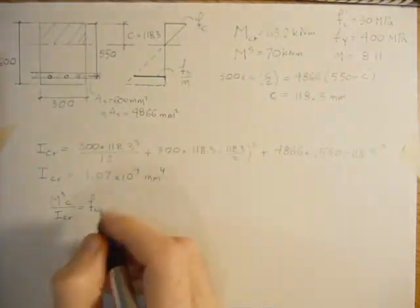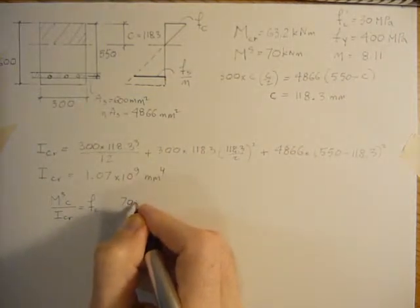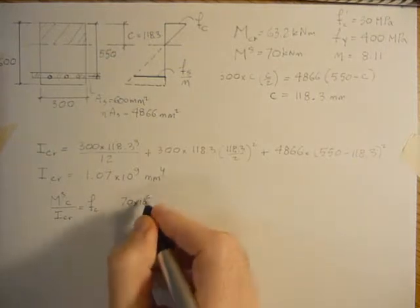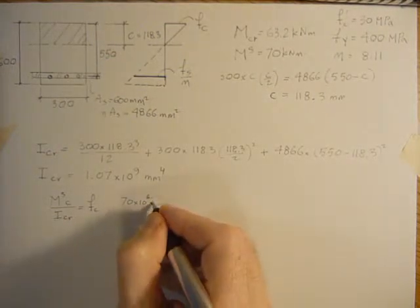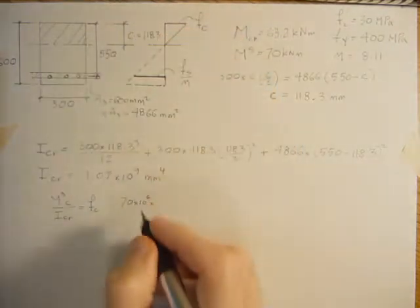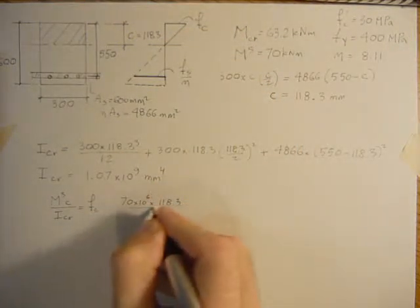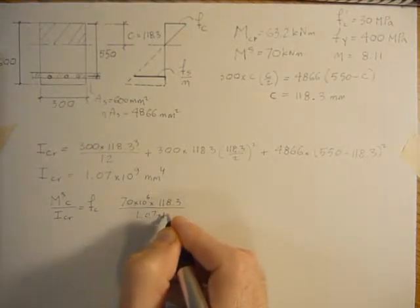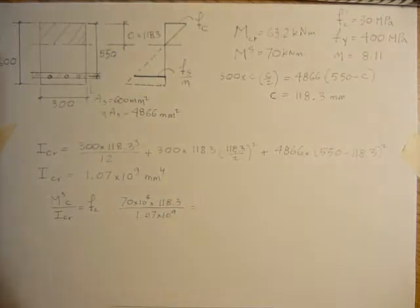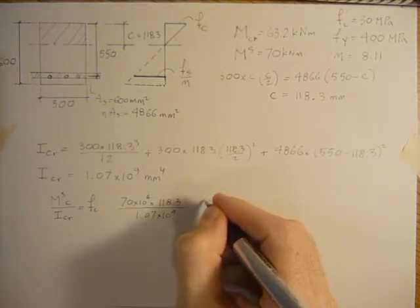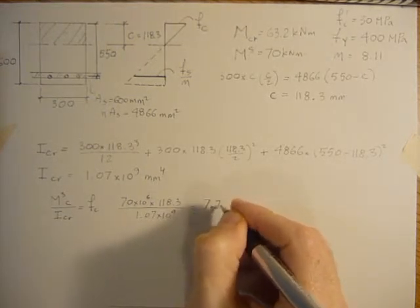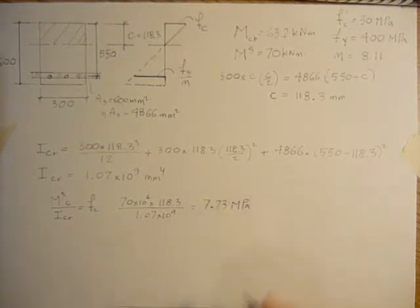So we got 70 times 10 to the 6 newton millimeters times 118.3, which is the C, divided by 1.07 times 10 to the 9. 70 to the 6 times 118.3 divided by 1079. Stress is 7.73 MPa.